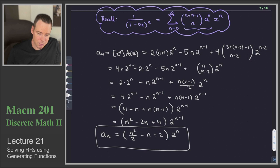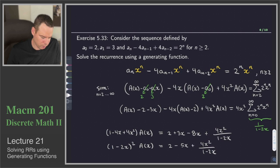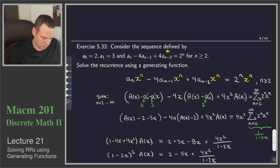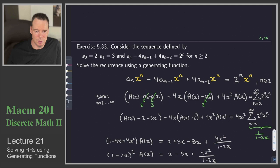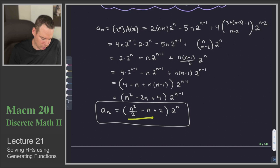We've solved this using generating functions. If you use the characteristic polynomial method instead: the characteristic polynomial has a double root at 2, so the homogeneous solution involves 2^n and n·2^n. With the non-homogeneous term 2^n, a particular solution adds n²·2^n. The general solution is a combination of 2^n, n·2^n, and n²·2^n — exactly what we found. Thanks very much for watching and we'll see you again next time.